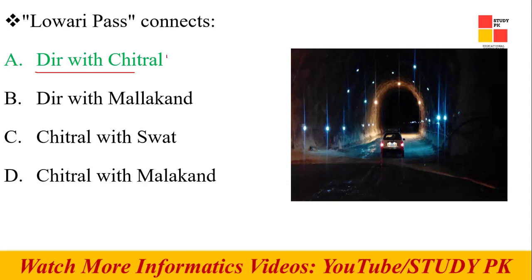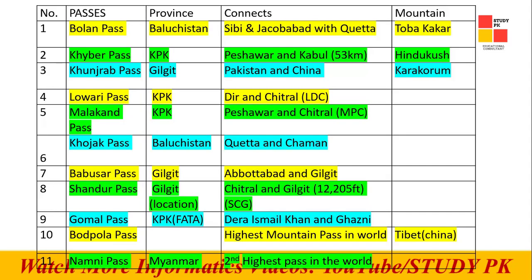In one paper there were two questions. There are 11 passes to prepare for PPSC, because in each paper there is a question about passes — where they are located and what they connect. Khyber Pass connects Peshawar with Jalalabad and Kabul. These are short tricks written for reference.